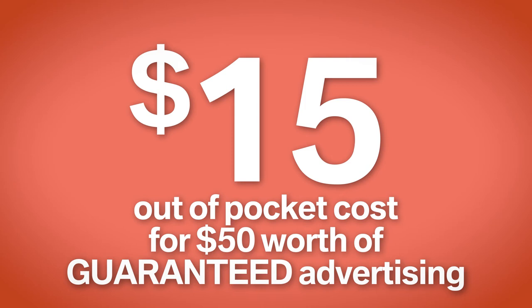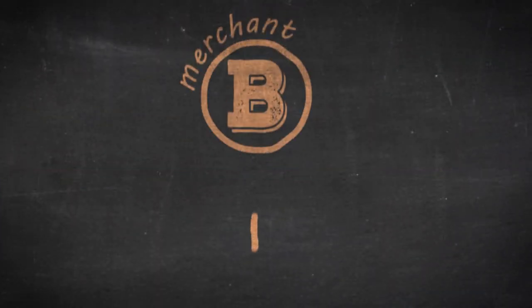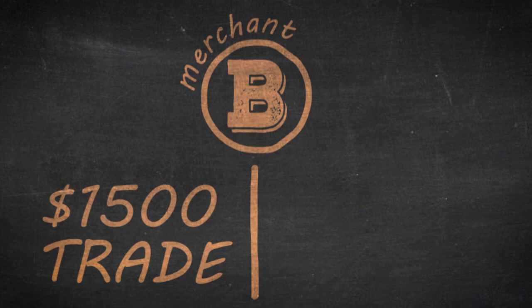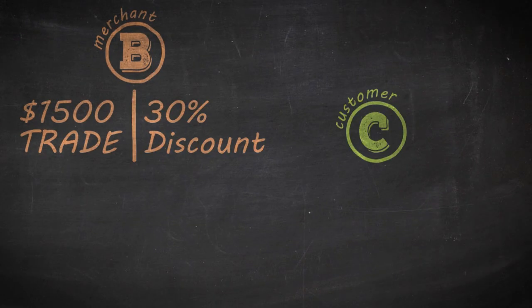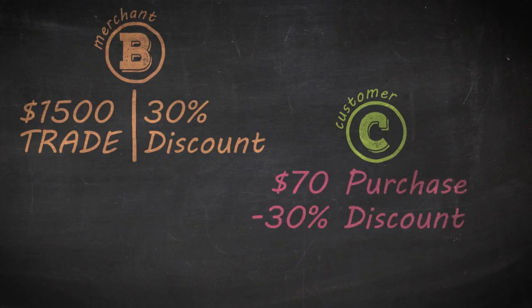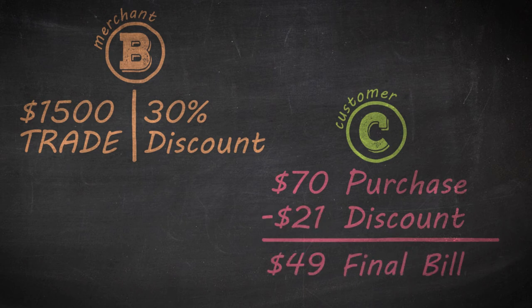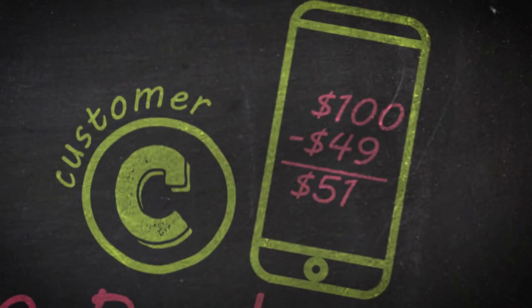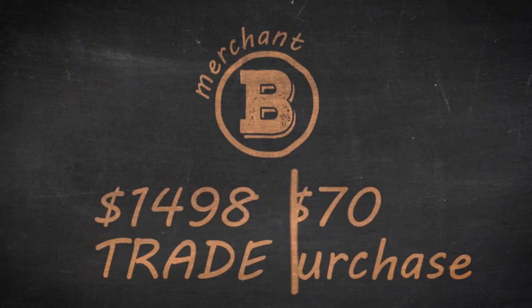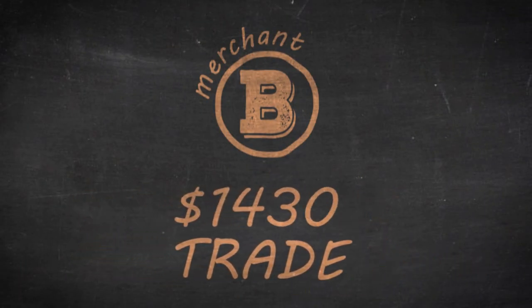Let's see that again. Merchant B commits to a $1,500 monthly trade. You offer a 30% discount at this merchant. Customer 2 visits the merchant and spends $70, getting a 30% discount. The customer has the discounted amount removed from their balance, while the merchant has the $70 deducted from their trade balance with you.